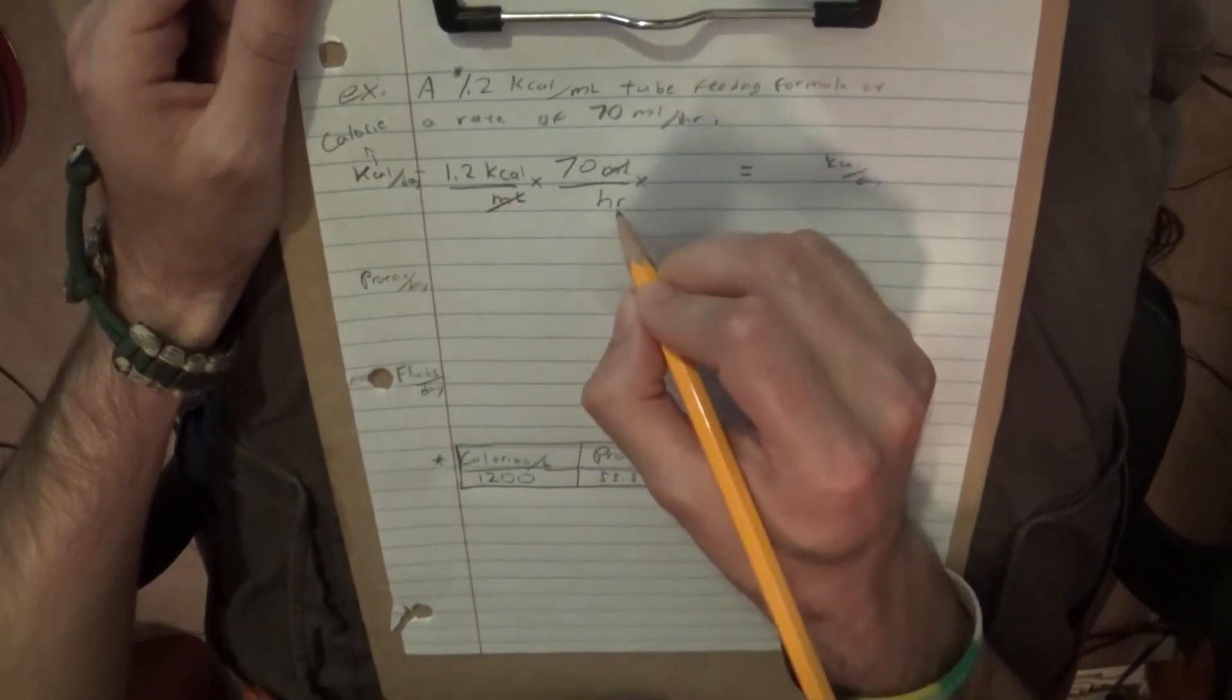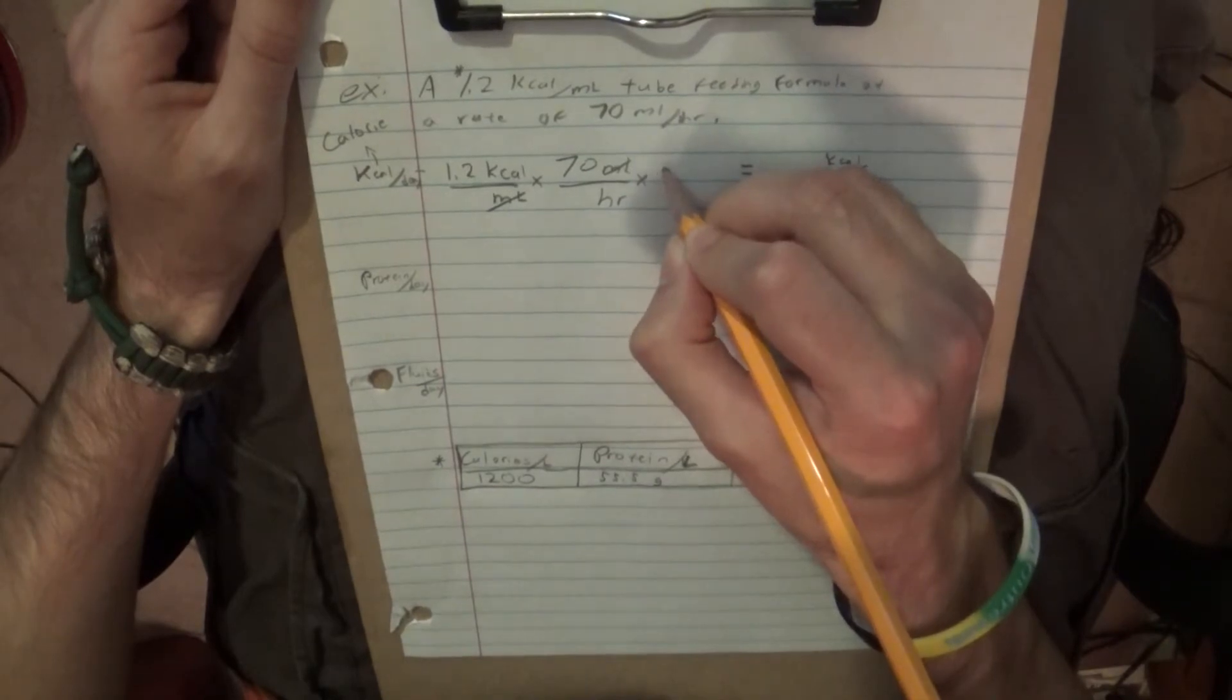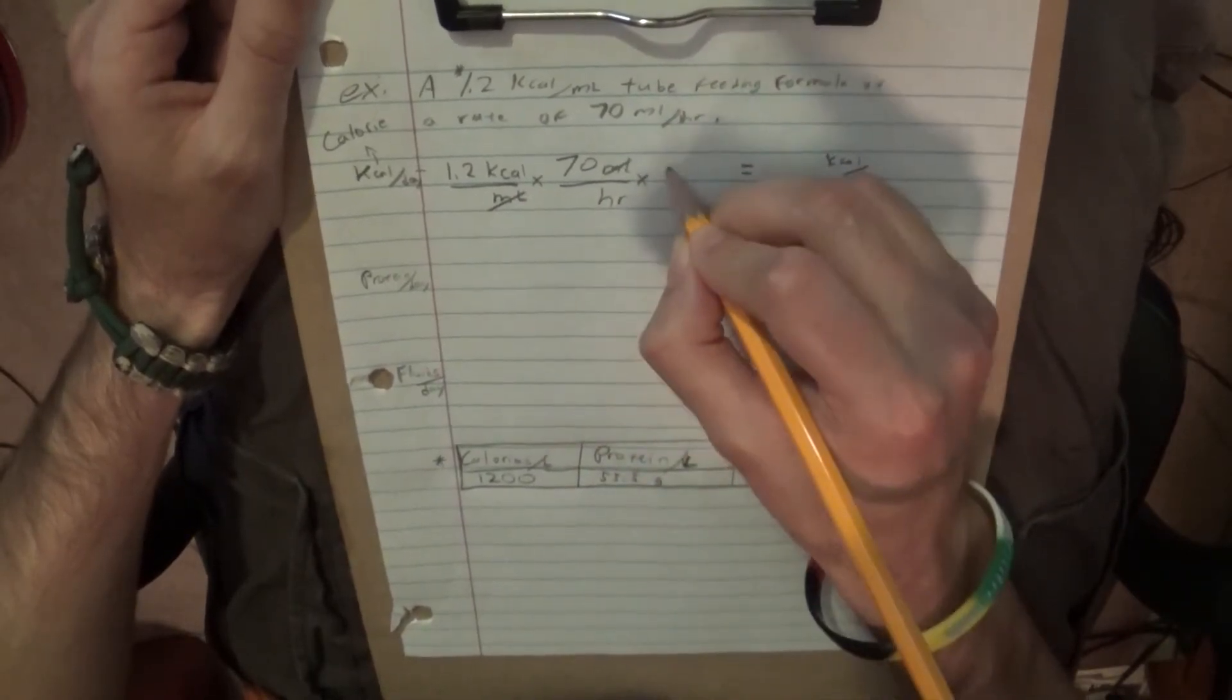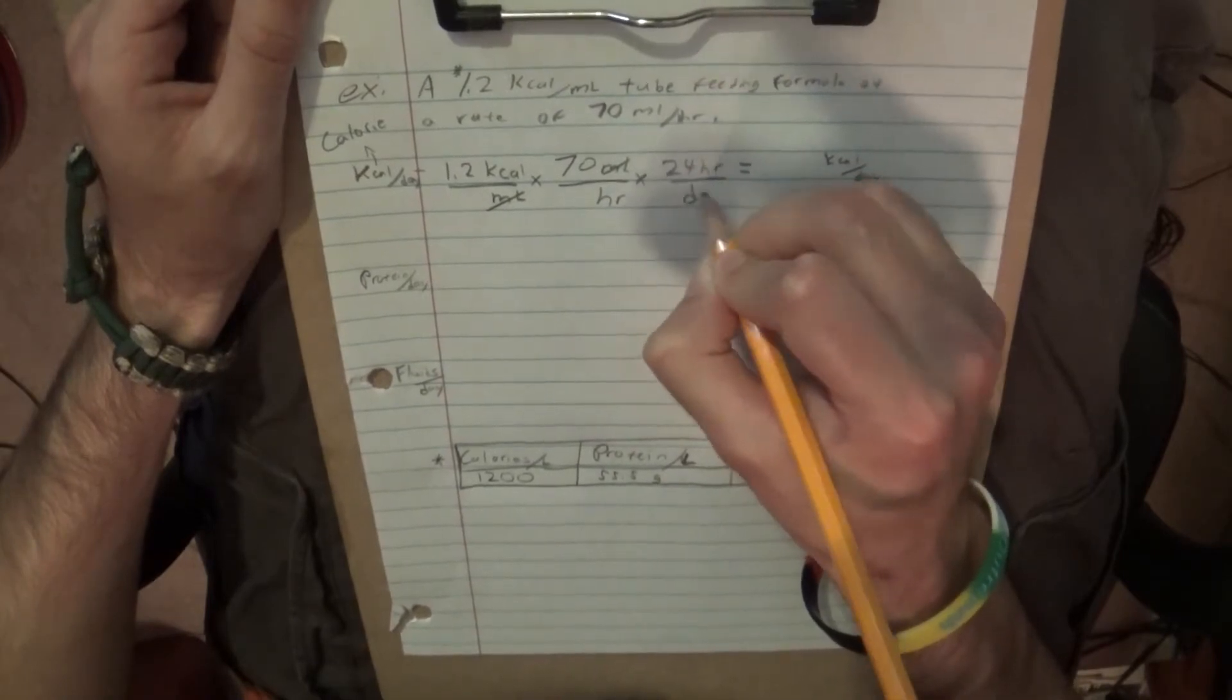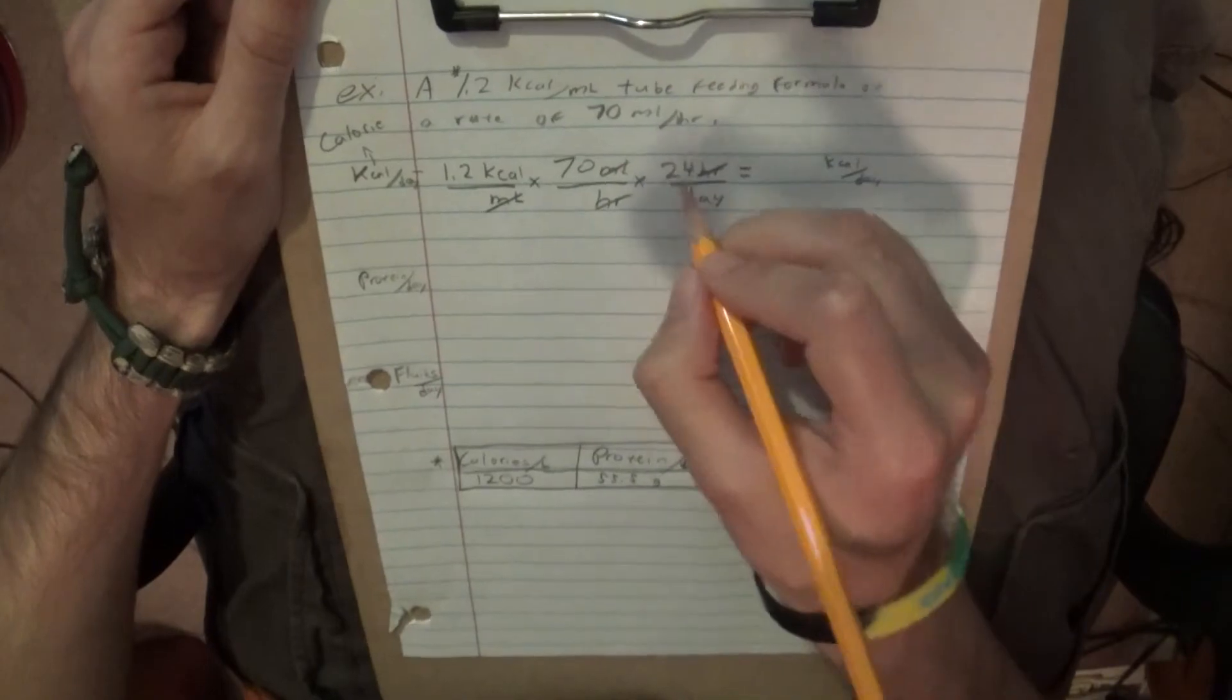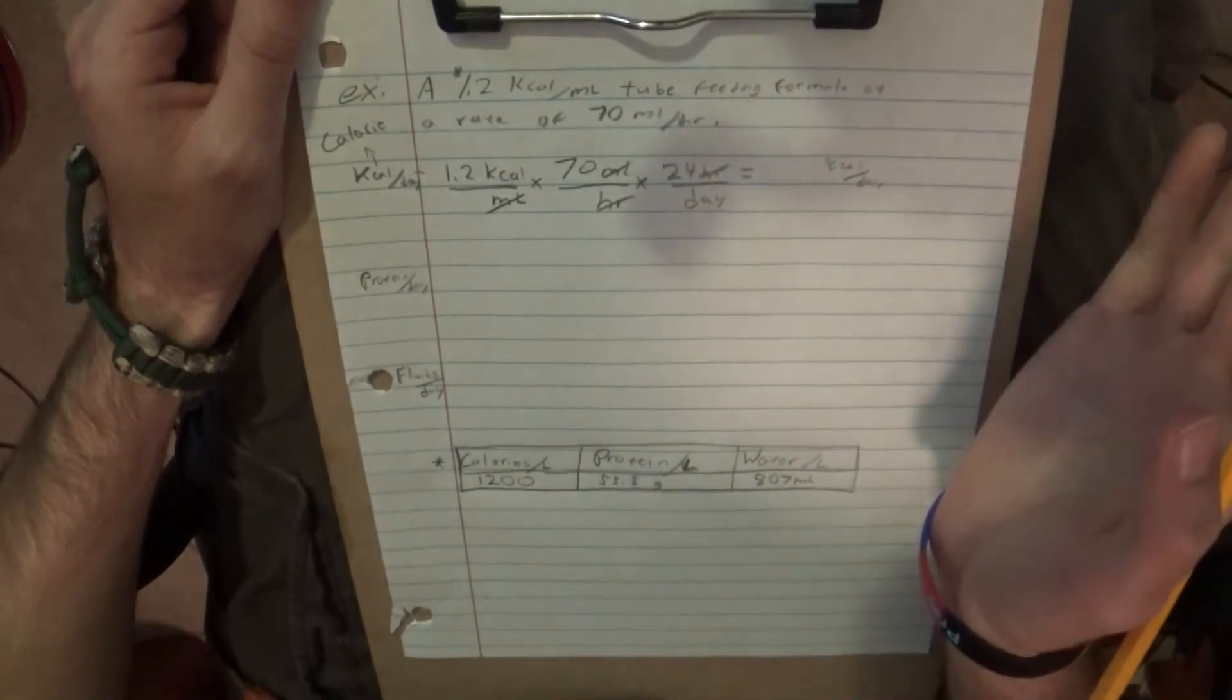But now we're left with kilocalories per hour. And in order to solve that and get rid of the hours, we need to find out how many hours are in a day. Well, 24 hours are in a day, of course. So, that cancels out the hours. Now, all you have to do is multiply the numbers. Just like that.